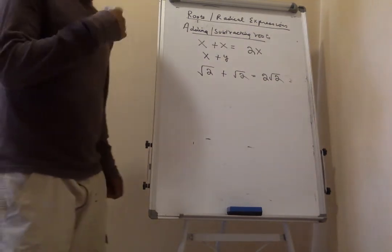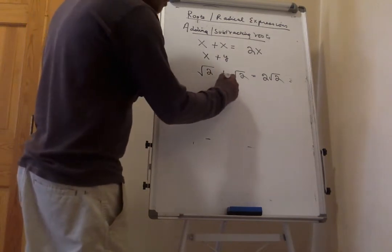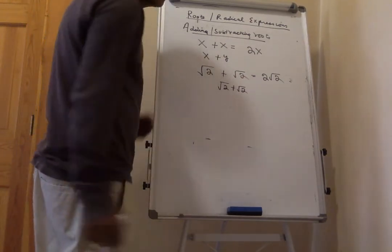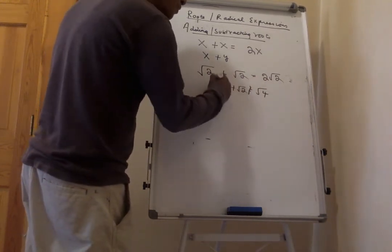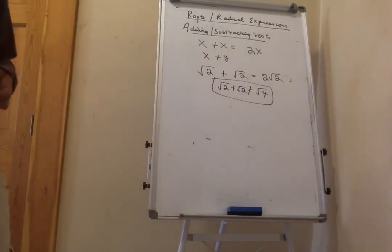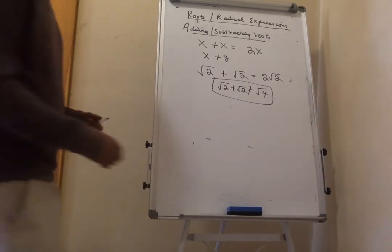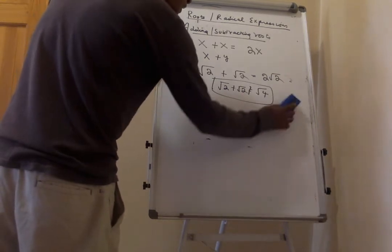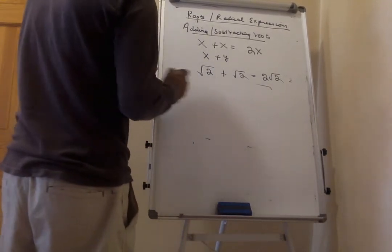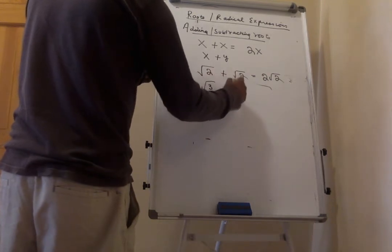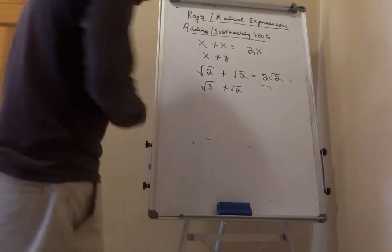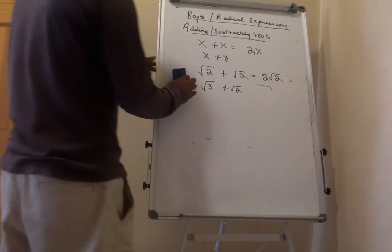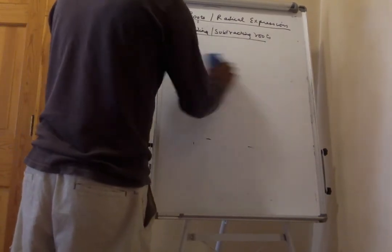A common mistake is to add the numbers inside the square root — don't do that. The square root of 3 plus the square root of 2 cannot be simplified because the values inside are different. In order to add or subtract roots, they must have the same value inside the root.